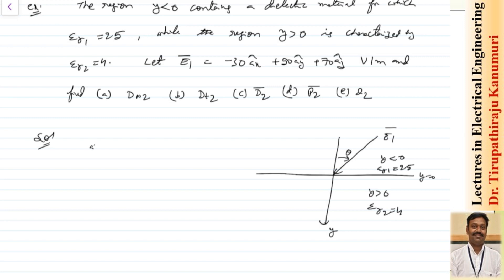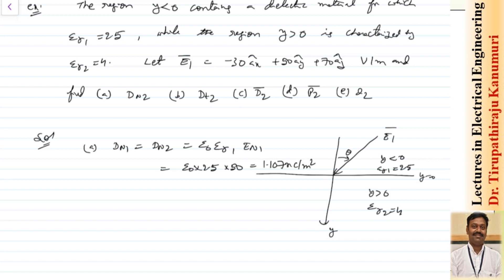We know Dn1 equals Dn2, which equals epsilon naught times epsilon r1 times En1. This equals epsilon naught times 2.5 times 50. Substituting epsilon naught as 8.84 times 10 to the power of minus 12, this gives 1.107 nano coulombs per meter squared.